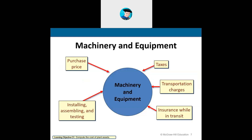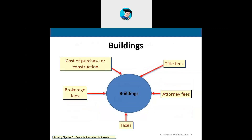For equipment like a dump truck, it's the purchase price of $25,000 plus taxes, plus transportation cost, plus insurance while it's in transit, plus any installation, final assembly, and testing. All of these costs make up the total cost of acquisition for that particular piece of equipment.